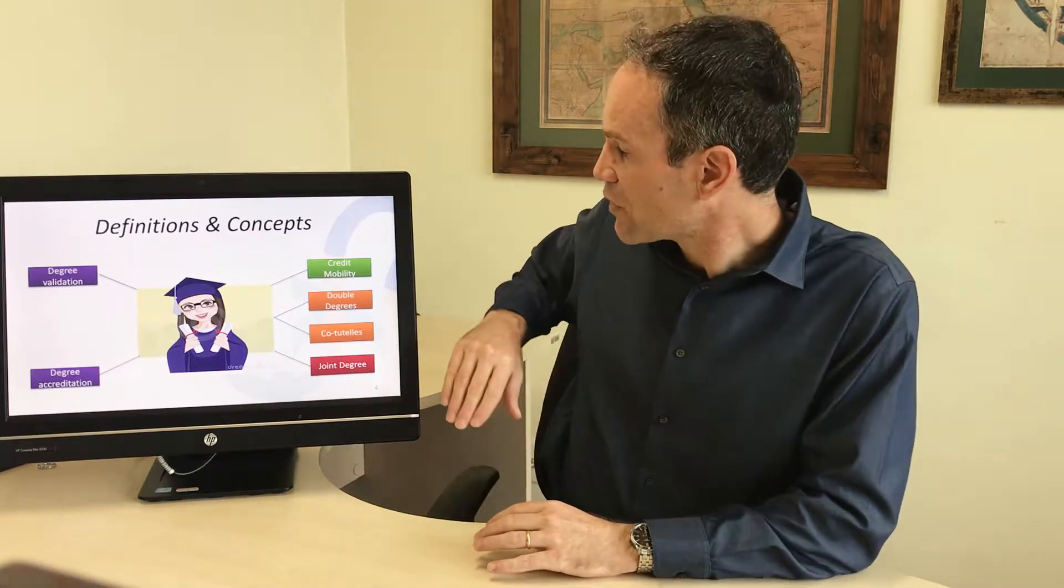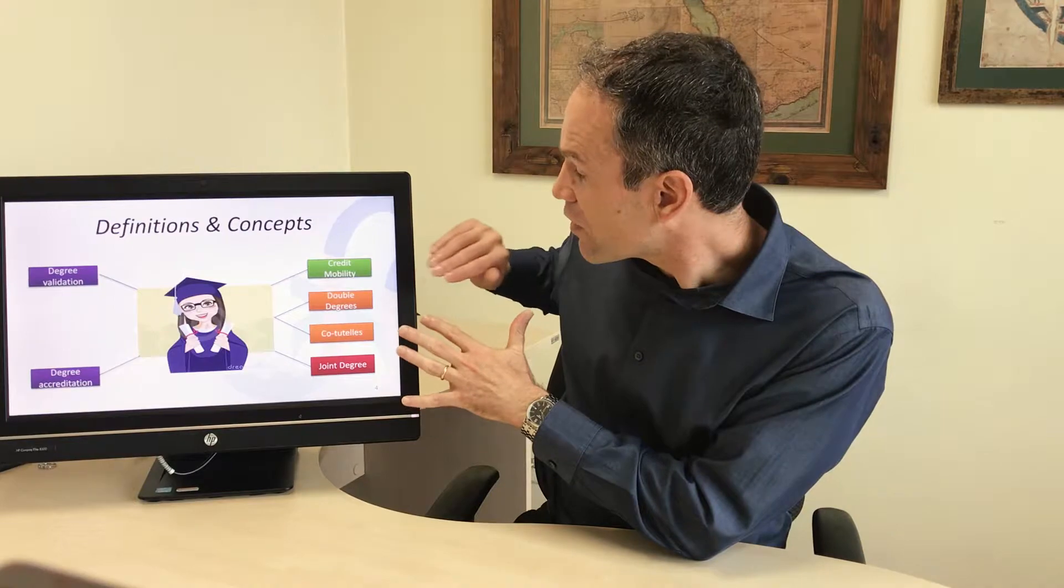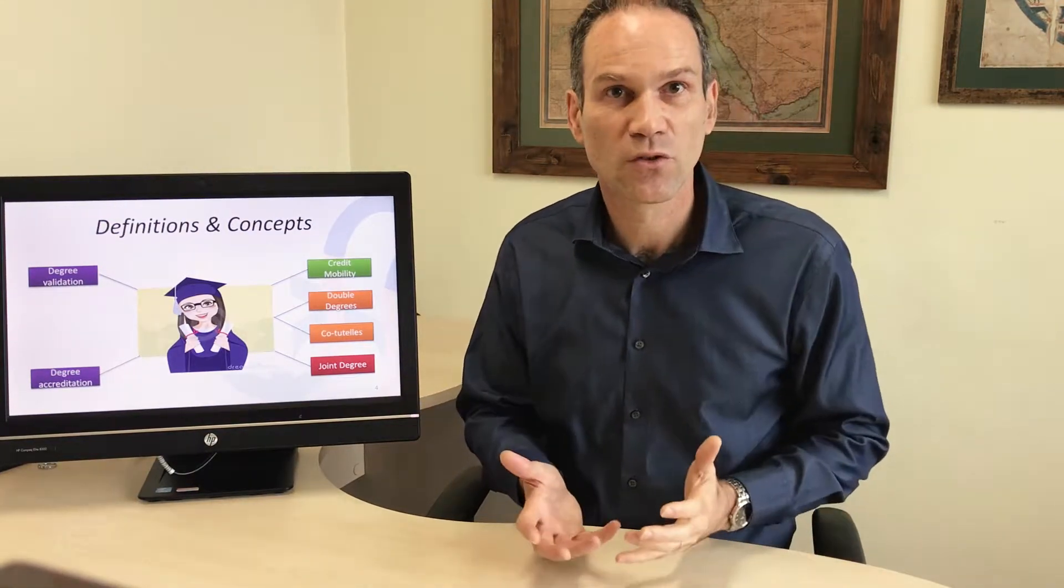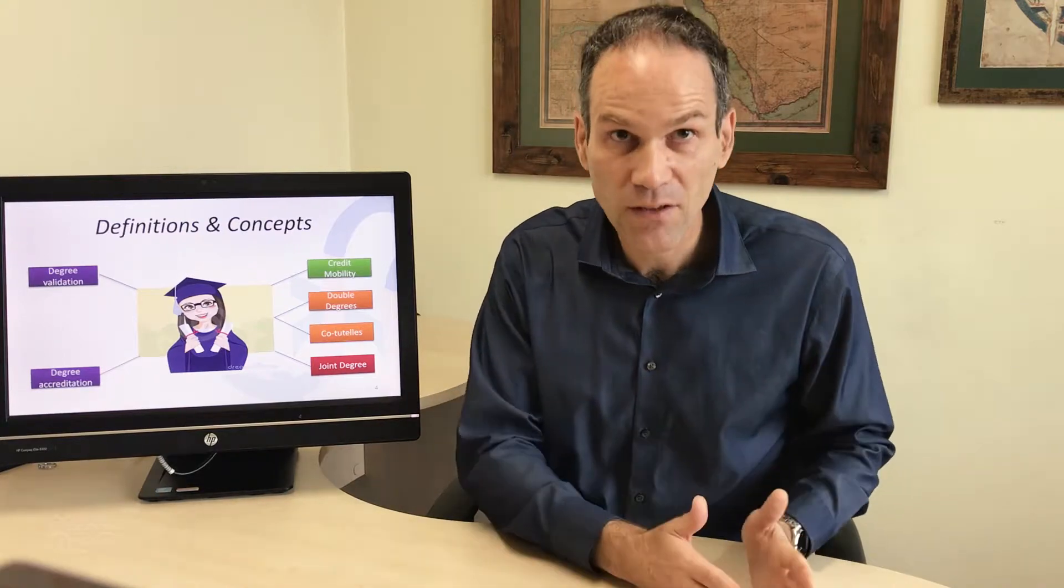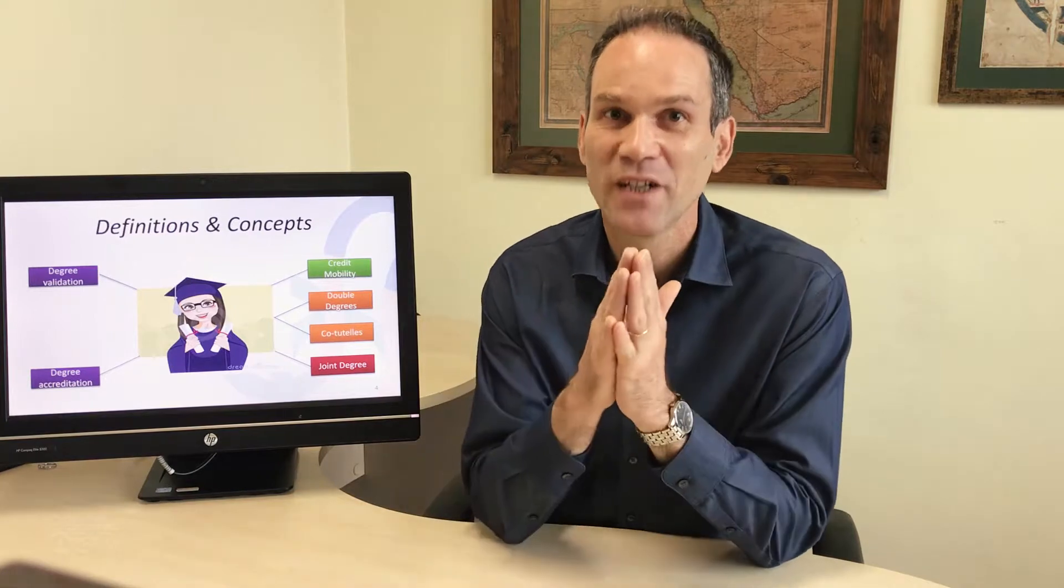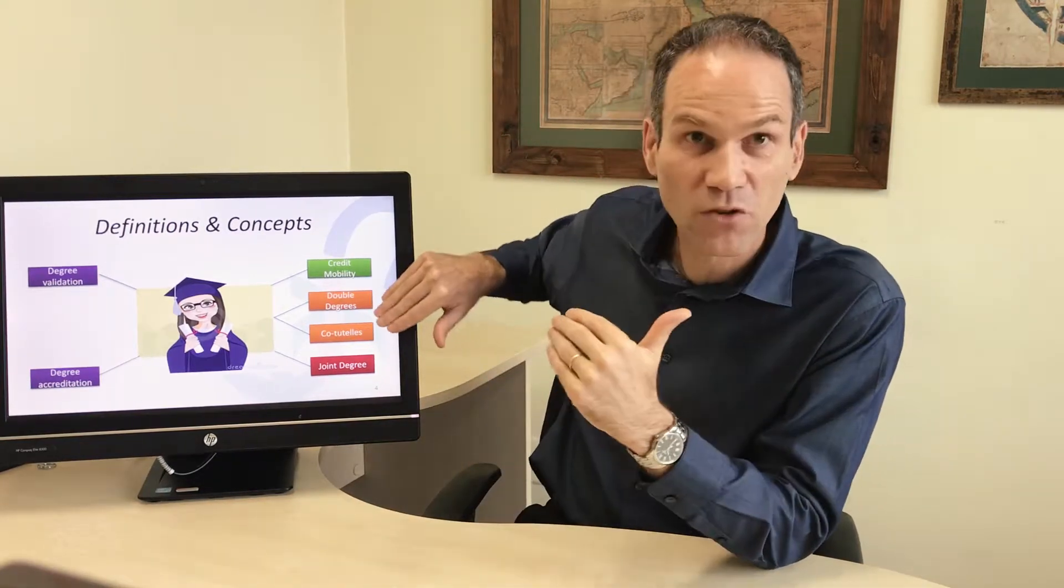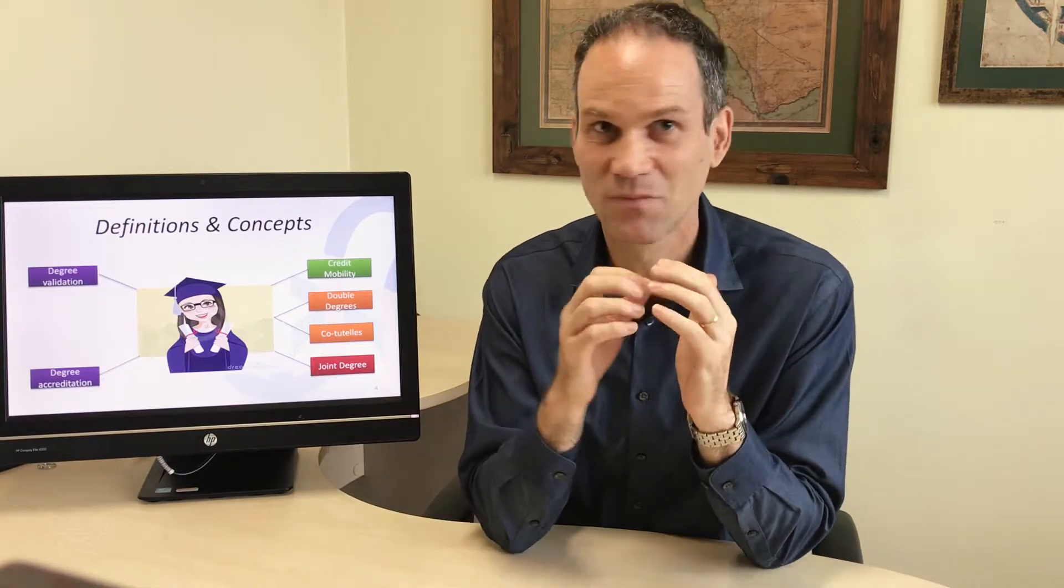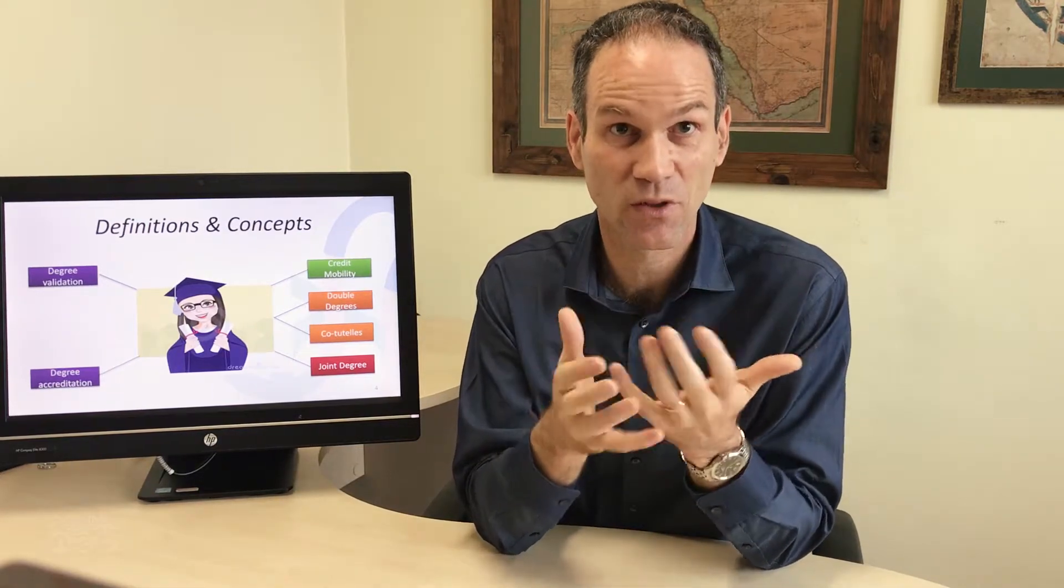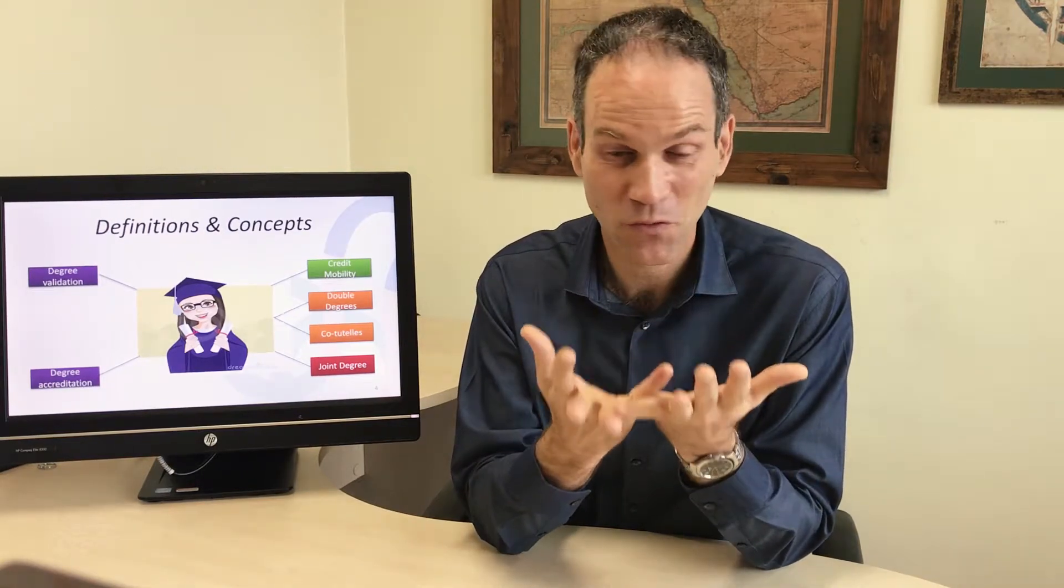Now if you restrict yourself to double degrees, you still have some other confusions, which is the level of the degree we're talking about. It can be at undergraduate level, master level, or PhD level. You have to be very clear on this with your colleagues. If you are discussing double degrees, the first thing you should discuss with your partner is what level of studies you are considering. It's a very natural source of confusion.